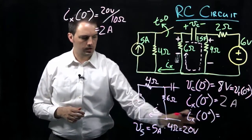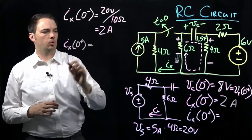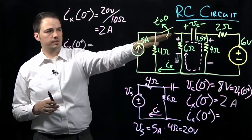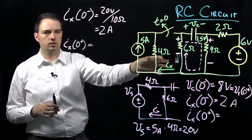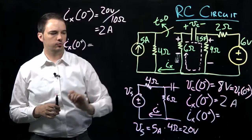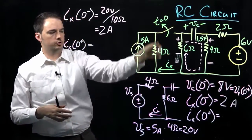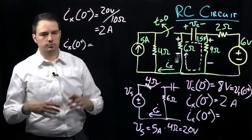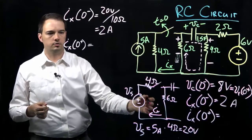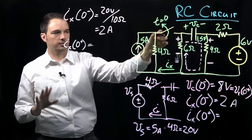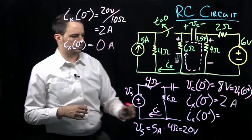Now if we ask what I sub x is immediately after opening the switch — at time zero plus — opening the switch disconnects the 5 amp source and the 4 ohm resistor, effectively breaking the loop. Since there's a break in the loop, there cannot be any current flow at all. So immediately after opening the switch, there will be no current flow through that part of the circuit — I sub x at zero plus equals zero.